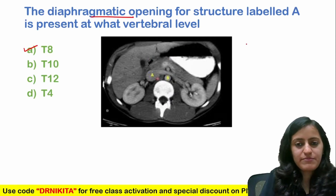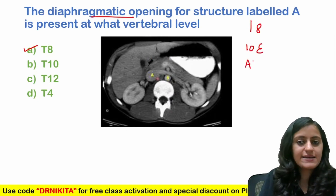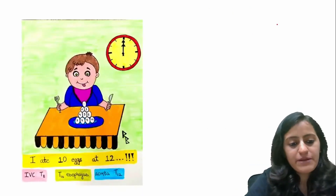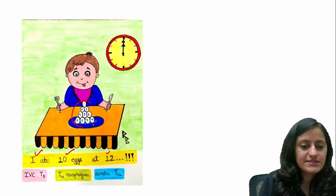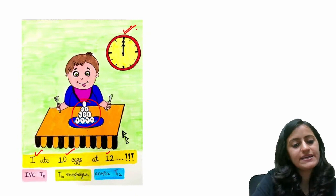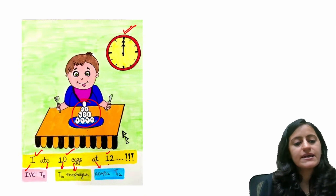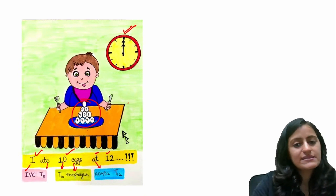So first of all, talking about the diaphragmatic openings, remember the mnemonic is I810x at 12. So I810x at 12 — these are the openings. This stands for: I for IVC at T8, T10 is esophagus, and aorta, and T12 is also for thoracic duct.